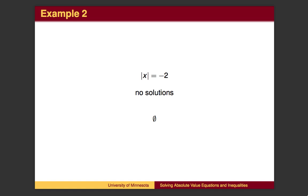Recall that the absolute value will always be positive. Here, we are asked to find when an absolute value is negative, which will never happen. The solution is the empty set.